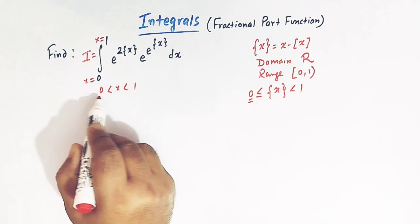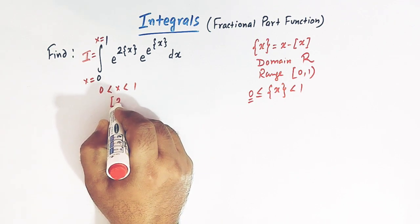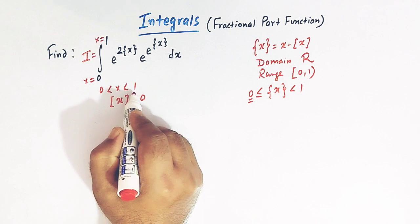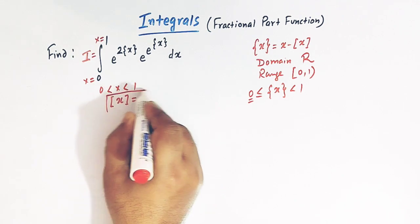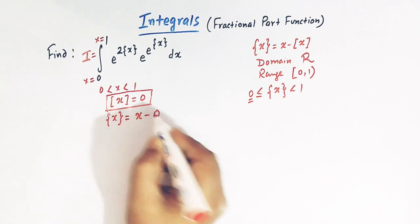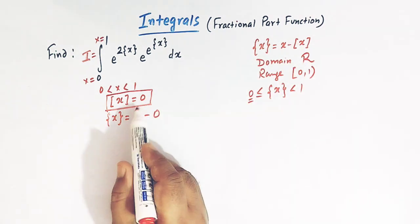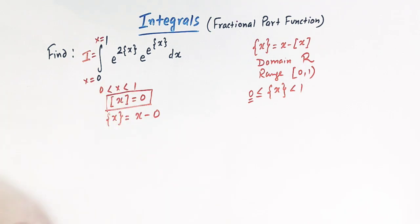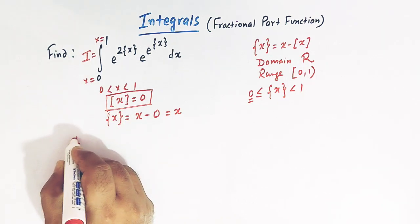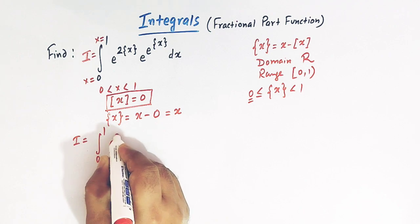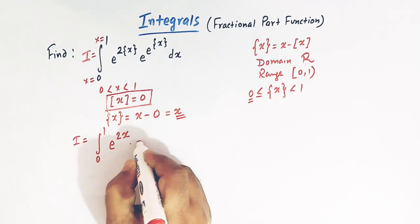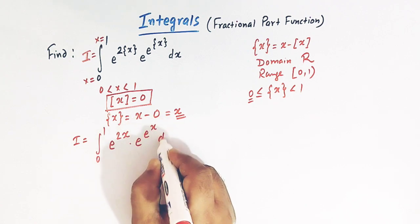Now when x lies between 0 and 1, we know that the greatest integer of x is equal to 0. This is an important step. So the fractional part of x becomes x minus 0, because the greatest integer of x is 0. So we can write fractional part of x is simply equal to x. Now our integral I becomes the integral from 0 to 1 of e raised to 2x, and here we have e raised to e raised to x.